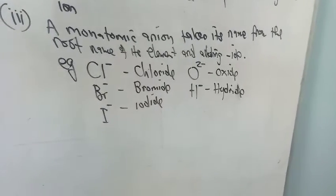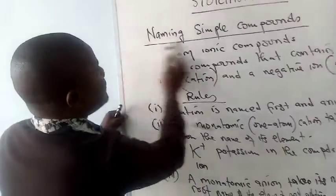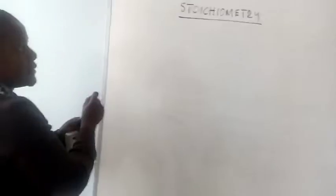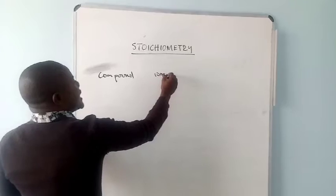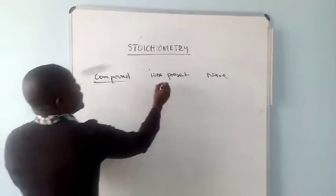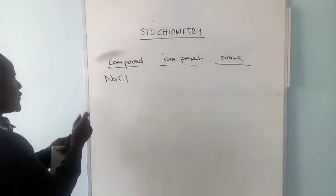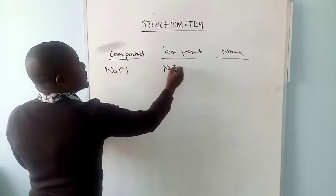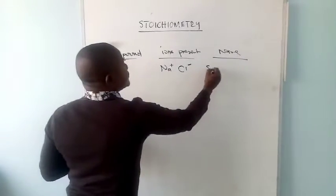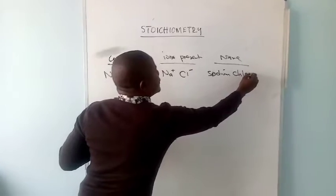Now let's look at compounds, the ions involved, and the name of the compounds. For the first compound we have the sodium ion and the chloride ion, so the name of this compound is sodium chloride.